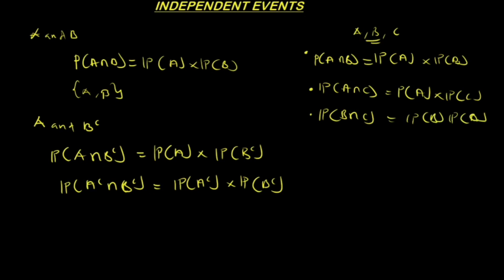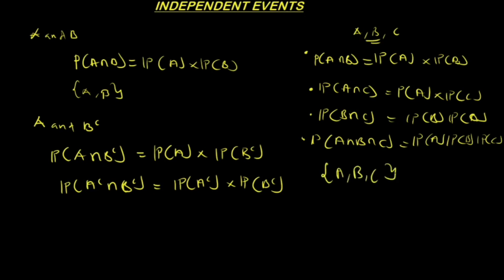And for the third condition, the probability of A intersection B intersection C equals the probability of A times the probability of B times the probability of C. If all these conditions hold, then A, B, and C are independent.